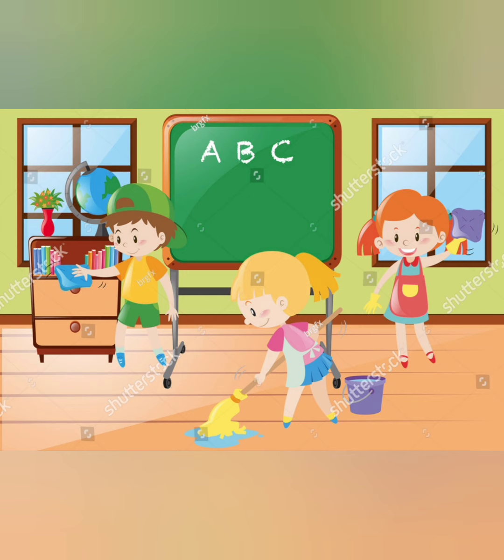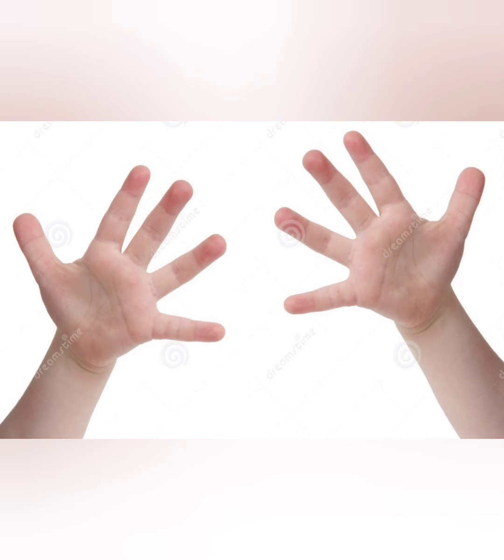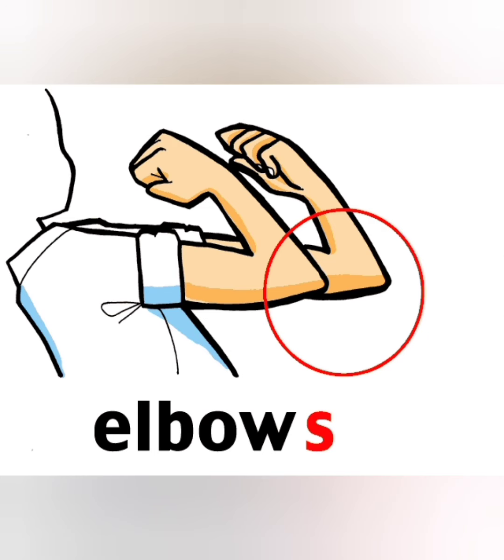How many hands we have? We have two hands. In our hands we can see ten fingers. With fingers and hands we can do so many things like writing, carrying objects, and holding things. In our hands we can also see elbows.